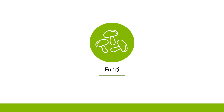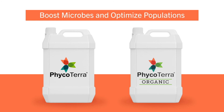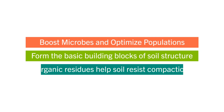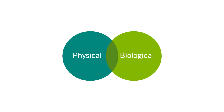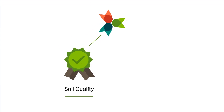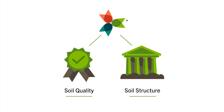Another way is from the fungi. You can boost and optimize those microbial populations with the application of Phycoterra or Phycoterra Organic. You can get them going and form those basic building blocks of soil structure. Organic residues also help cushion the soil and help it resist compaction. Just remember that the compaction issue is not just a physical thing — there's also a significant biological component. Phycoterra can help you optimize these microbial populations and restore that soil quality and structure you're looking for long-term.